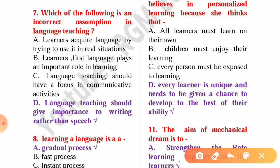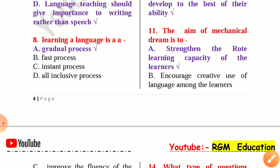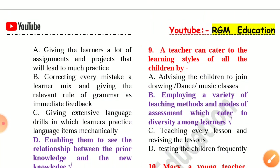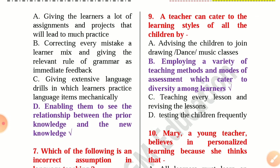Question number 7: Which of the following is an incorrect assumption in language teaching? Answer: Language teaching should give importance to writing rather than speech. Question 8: Learning a language is a gradual process. Question 9: A teacher can cater to the learning styles of all the children by employing a variety of teaching methods and modes of assessment which cater to diversity among learners.